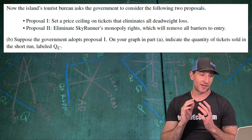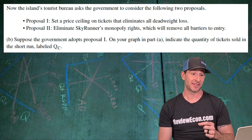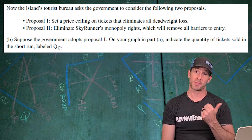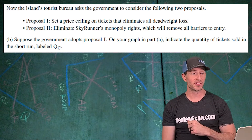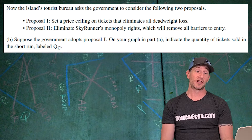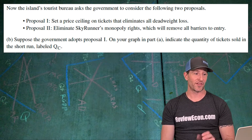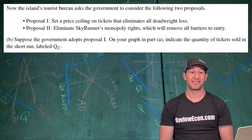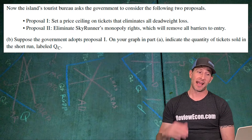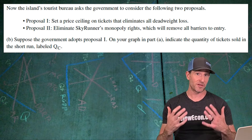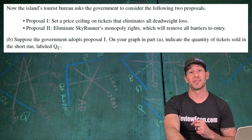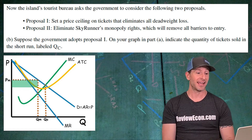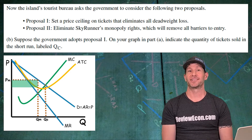Moving on to part B. The island's tourist bureau is asking the government to consider two proposals: set a price ceiling on tickets that eliminates all deadweight loss, or eliminate Skyrunner's monopoly rights and remove all barriers to entry. For part B first, suppose the government adopts proposal one. We indicate the quantity of tickets sold in the short run, labeled QC — a price ceiling that eliminates all deadweight loss sets price to marginal cost, found where the demand curve intersects the marginal cost curve. That's the allocatively optimal quantity.